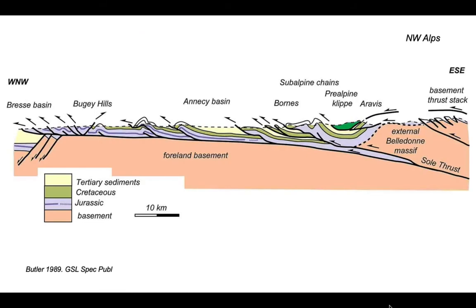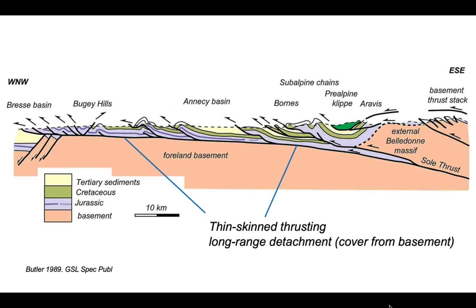That fold structure we just looked at comes from a regional cross-section drawn through the outer parts of the Northwest Alps and it's a good example of a style of deformation we call thin-skinned. It's thin-skinned thrusting because the deformation is only skin deep — restricted to those cover sediments of largely Jurassic and younger rocks — and the underlying basement is effectively undeformed, behaving rather like a rigid tabletop across which the cover sediments have been pushed.